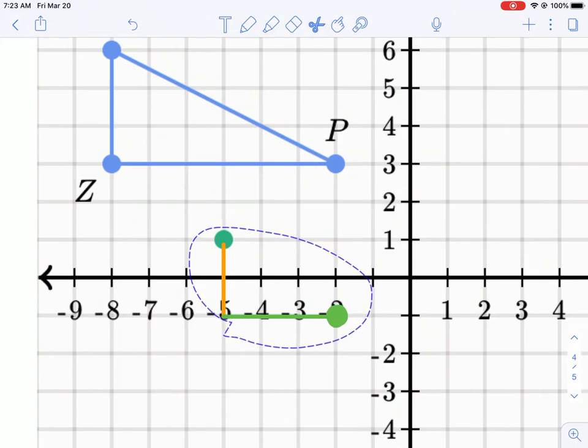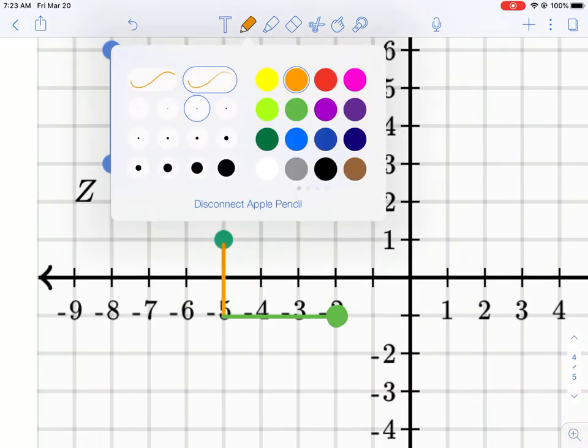I need to make sure I maintain my same proportions. The orange should still be two units down. The green should still be three from that and it still is.